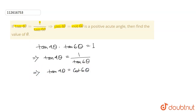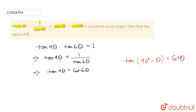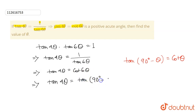Now, the formula is tan(90° − θ) equals to cot θ. So here we can see tan 4θ equals to cot 6θ, which is tan(90° − 6θ).